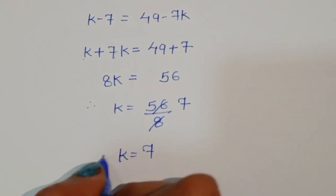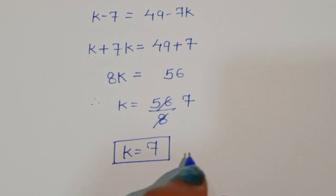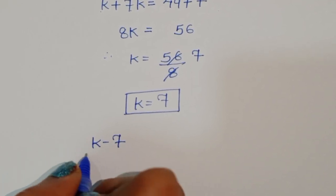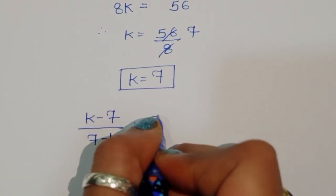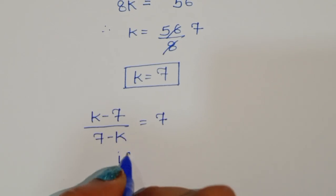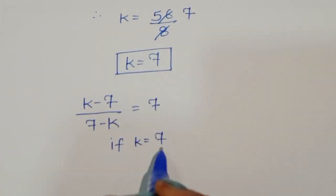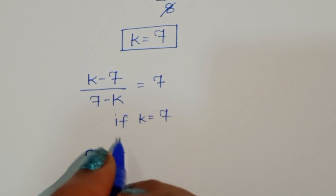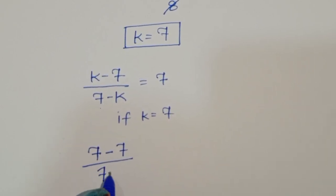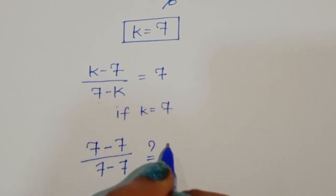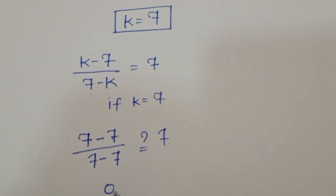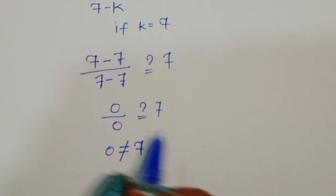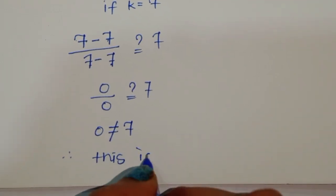We got k equals 7. Now let's verify by substituting back into the equation: (7 minus 7) divided by (7 minus 7) equals 7? That gives 0 divided by 0, which is not equal to 7. So this is not a valid solution.